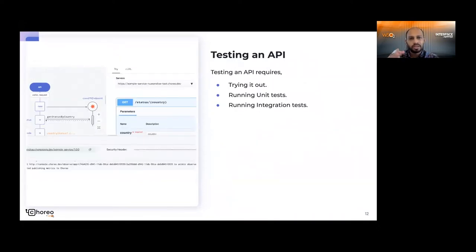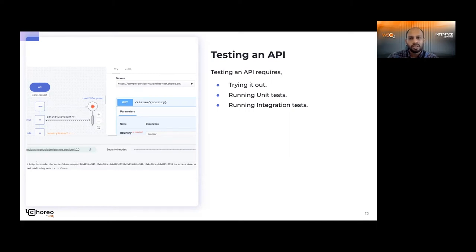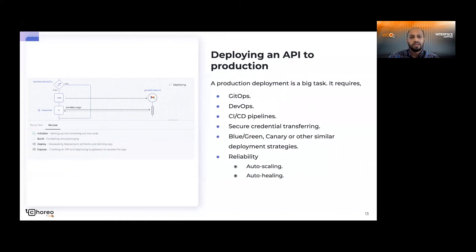And once the development is done, the next step is to go and test your API, which involves first trying it out just to make sure its functionality is working fine. Then implementing unit tests so that you test all of the individual functions of the API properly, and then writing integration tests, just to make sure that whatever new changes you introduce to the API don't break anything else.